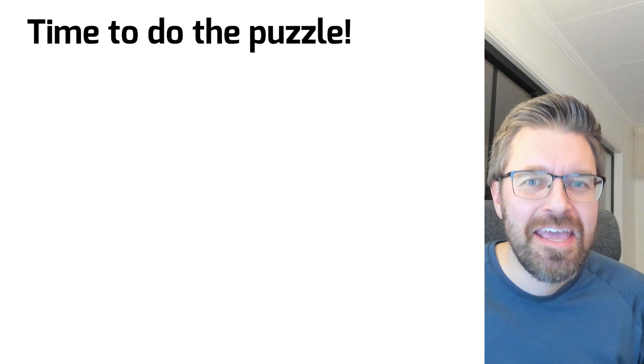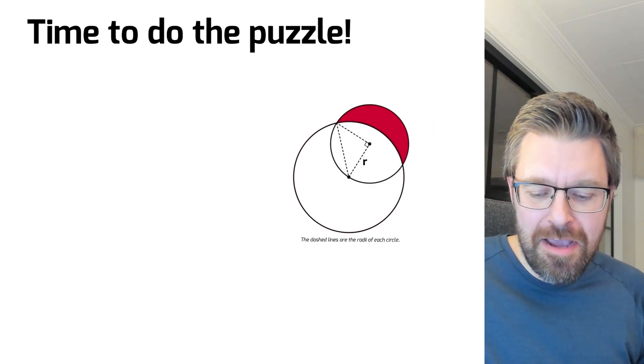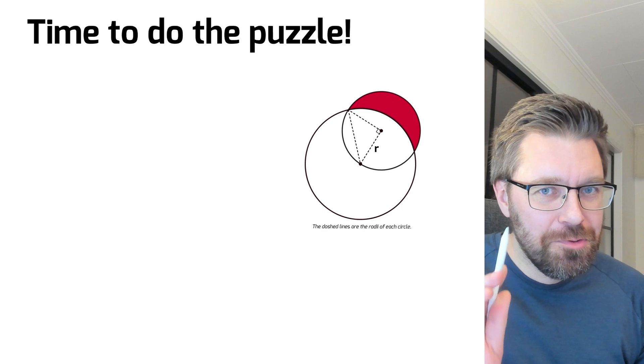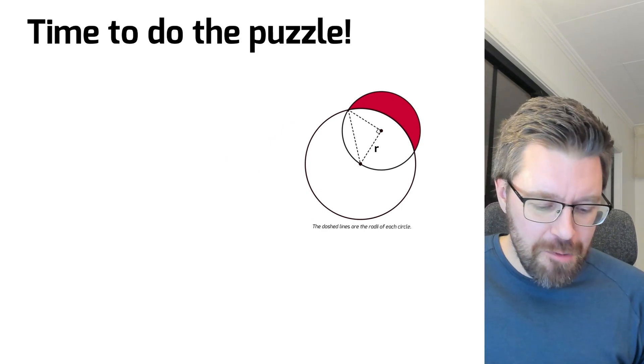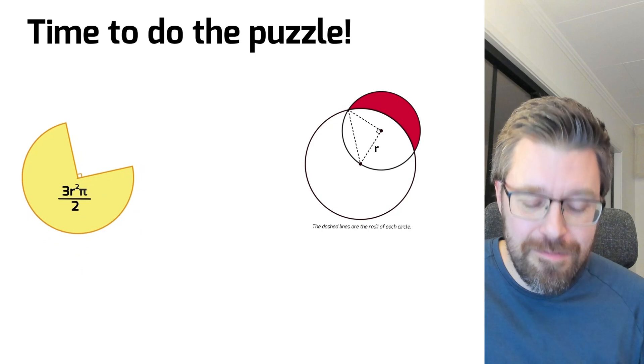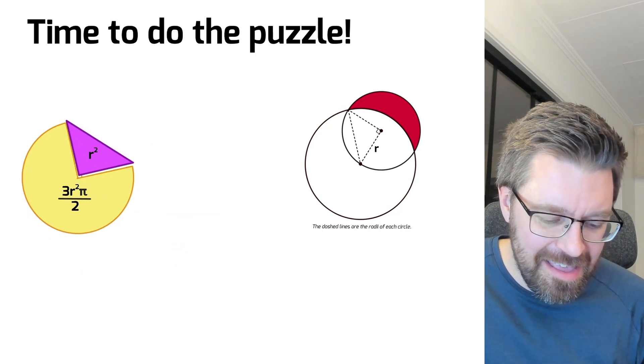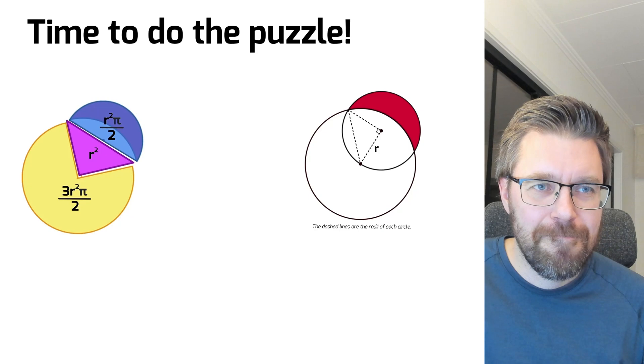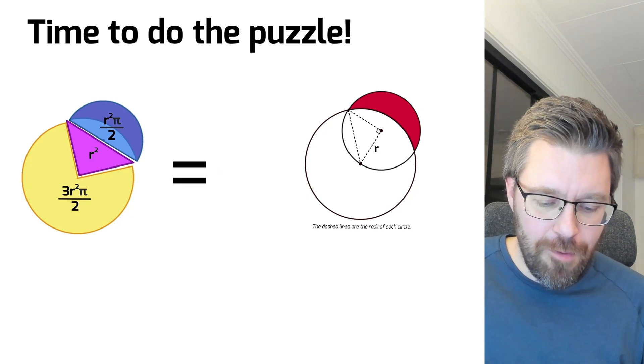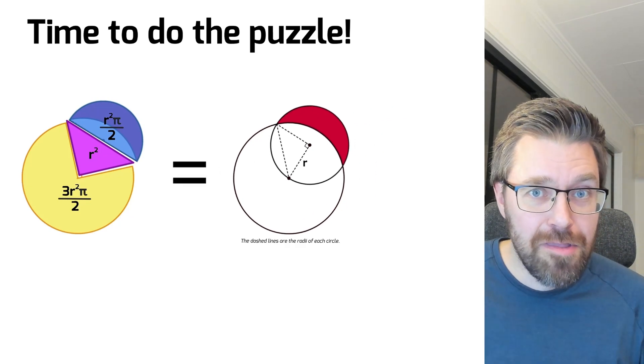Finally, it's time to do the puzzle. To construct this image, you can do it in two ways with these puzzle pieces. The first way is to take the yellow piece, okay, and add this piece and then add this piece. And then it equals, of course, the image that you had at the start.